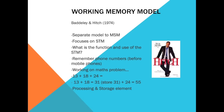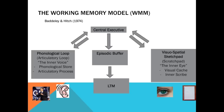So working memory is about processing and storage in short-term memory. The model has five separate systems. At the top is the central executive, known as the controlling system. Then there are the slave systems: the phonological loop, which contains the phonological store and the articulatory process, sometimes called the inner voice; and the visuospatial sketchpad, which contains the visual cache and the inner scribe, sometimes called the inner eye. Finally, there is the episodic buffer, which links down to long-term memory.